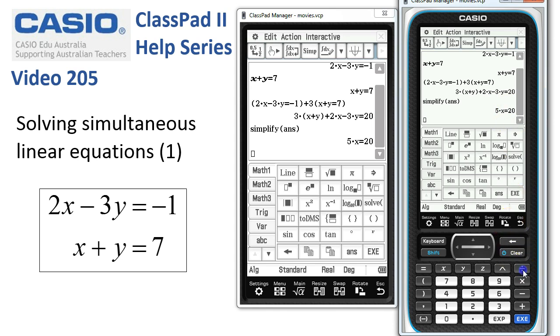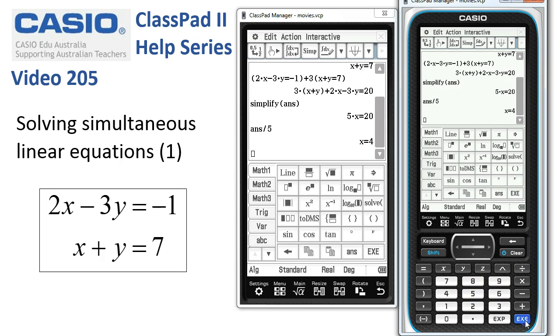The next step is to divide both sides by 5. Tap execute, and we've got our first solution: x = 4.